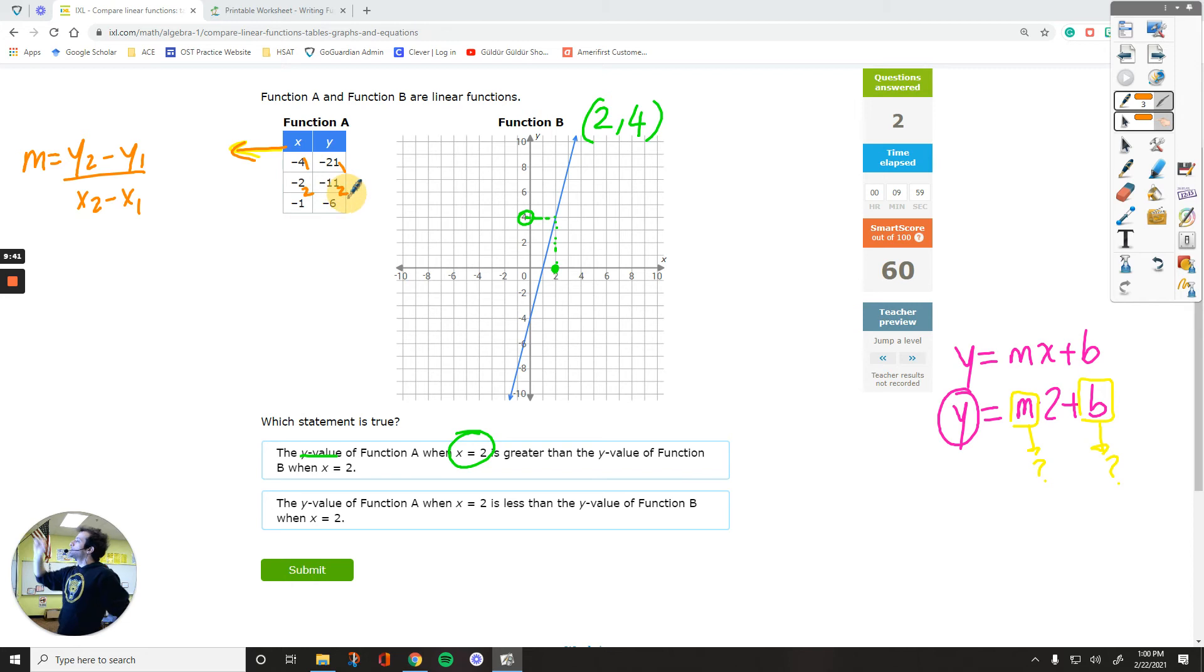x1 and y1, x2 and y2. Let's plug them in. y2 is negative 11 minus negative 21 divided by x2 is negative 2 minus x1 is negative 4. So the numerator is going to be positive 10. Denominator is going to be positive 2. Divide both numbers. The slope is 5.